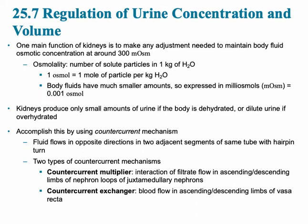The regulation of urine concentration and volume is defined by something called the milliosmol. The unit milliosmol has to do with solute concentration — it's defined as the number of solute particles in one kilogram of water. It's similar to osmolarity, but osmolarity is concerned with specific ions, whereas milliosmol counts the total number of solute particles regardless of type. This osmolality needs to stay around 300 milliosmols.